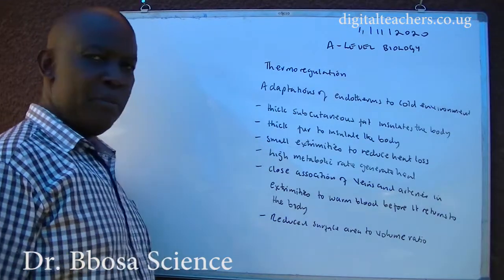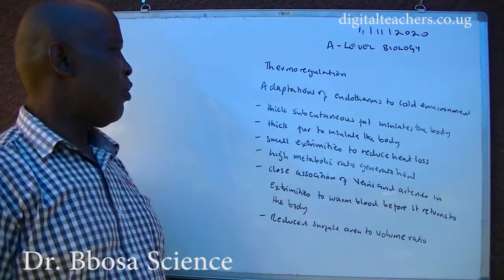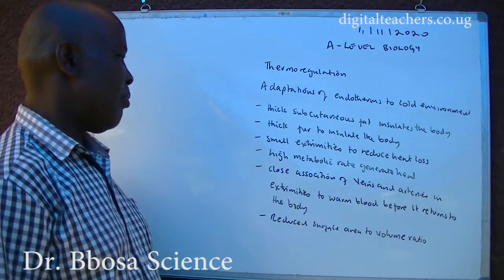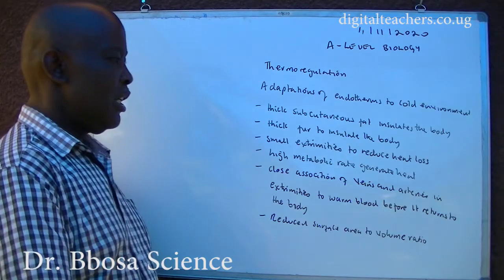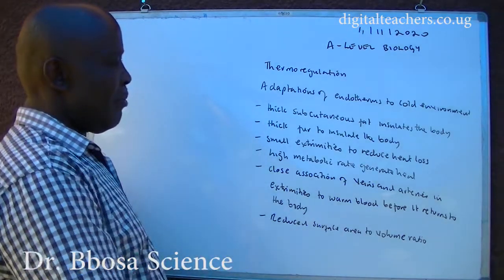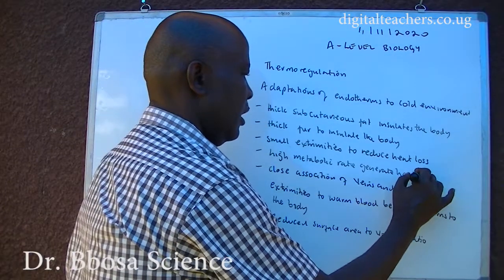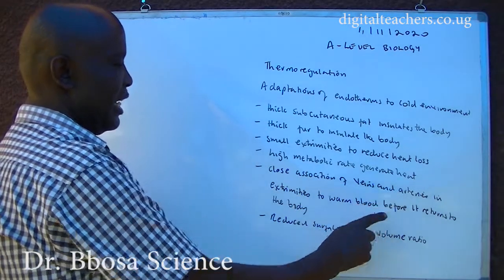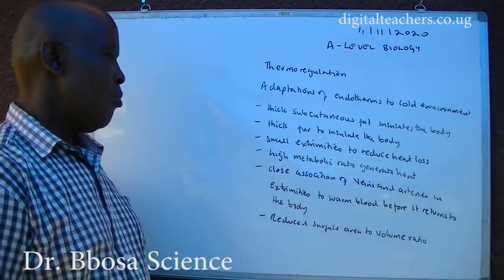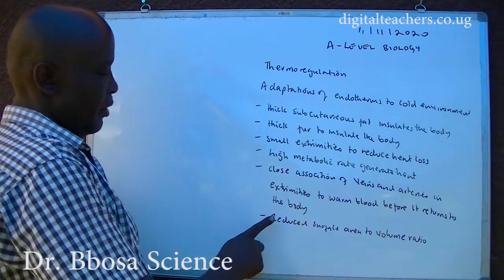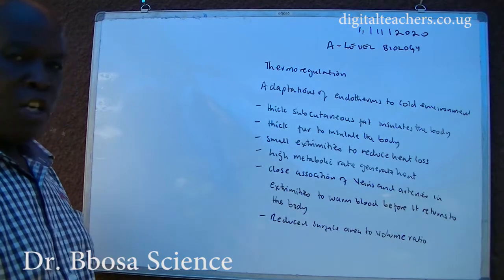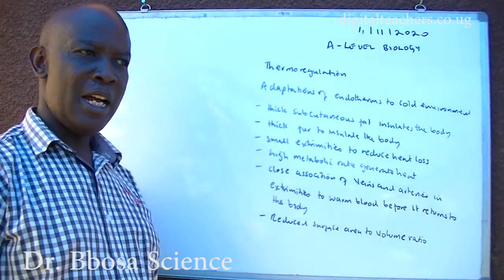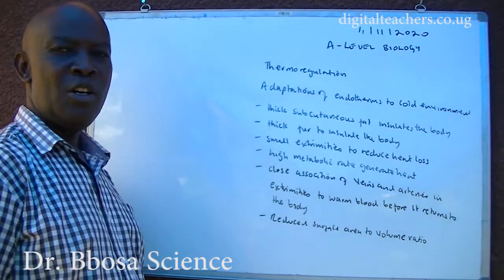Adaptations of endotherms to cold environments: they have thick subcutaneous fat to insulate the body; small extremities to reduce heat loss; high metabolic rate to generate heat; close association of veins and arteries in extremities to warm blood before it returns to the body; and reduced surface area to volume ratio. Generally, animals living in cold environments are bigger than those living in hot environments.